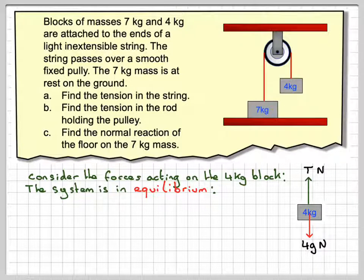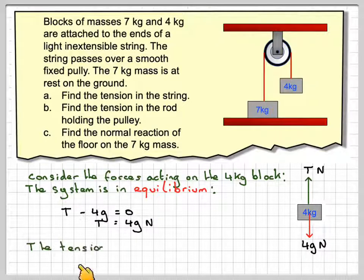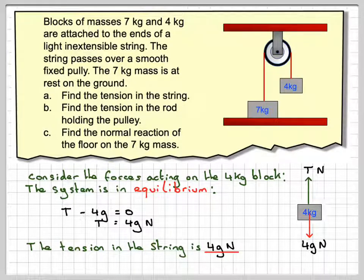or no force moving it, and therefore T minus 4g will be equal to 0, which means T is equal to 4g. The tension in the string is 4g newtons.